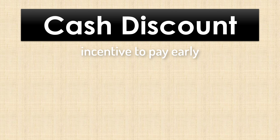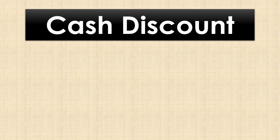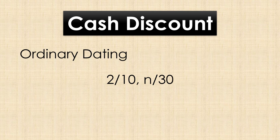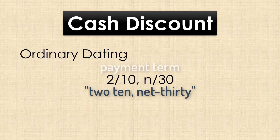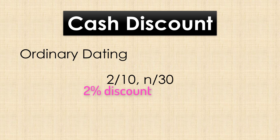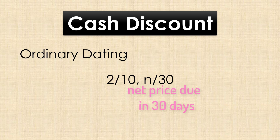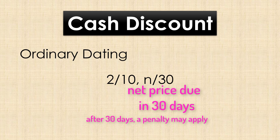There are various presentations of cash discount terms and dating methods, but we'll focus mainly on ordinary dating here. Here's a common example. This is read 2/10 net 30. The 2/10 means that the buyer gets a 2% discount if they pay within 10 days. The net 30 means that the net price is due in 30 days. After 30 days, the buyer might be assessed a late fee or an interest charge, based on agreed terms between the buyer and the seller.